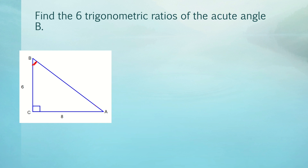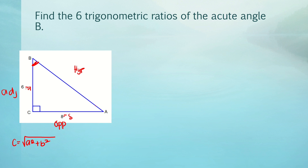Let's have another example: find the six trigonometric ratios of acute angle B. With angle B as our reference, the side opposite is 8 and the adjacent side is 6. The hypotenuse c is unknown. We solve using c = √(a² + b²) = √(6² + 8²) = √(36 + 64) = √100 = 10. So our hypotenuse c = 10.